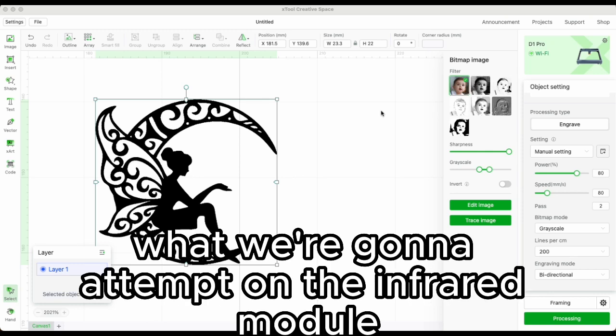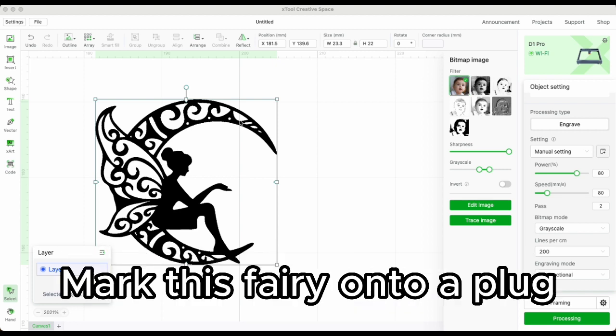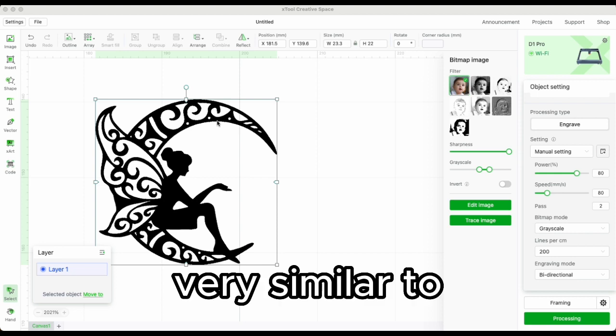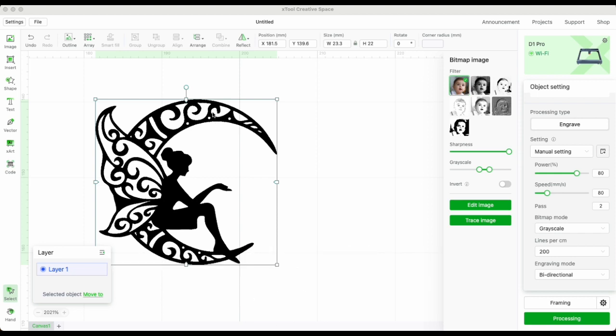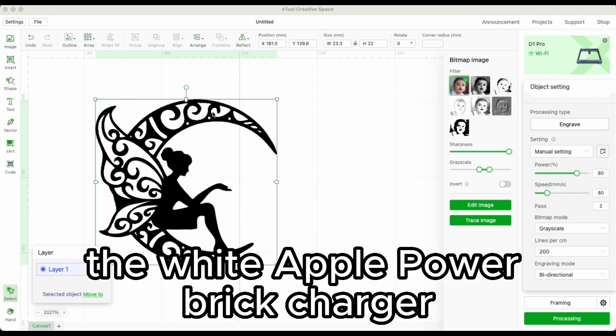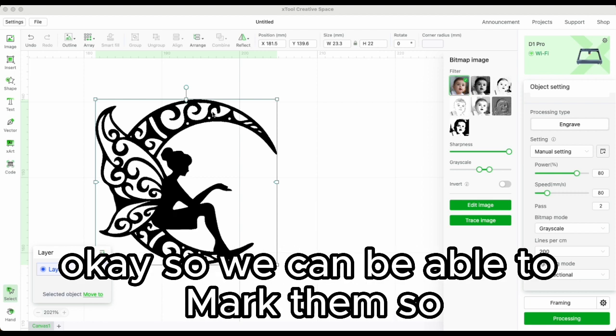Today what we're going to attempt on the infrared module is I'm going to engrave or mark this fairy onto a plug, an adapter plug very similar to your Apple charger, the white Apple power brick charger overhead, so we can mark that.